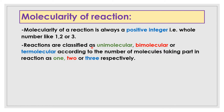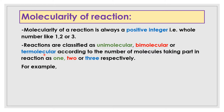Reactions are classified as unimolecular, bimolecular, or termolecular according to the number of molecules taking part in a reaction as 1, 2, or 3 respectively. If only one molecule takes part, it is unimolecular; two molecules means bimolecular; three molecules means termolecular.